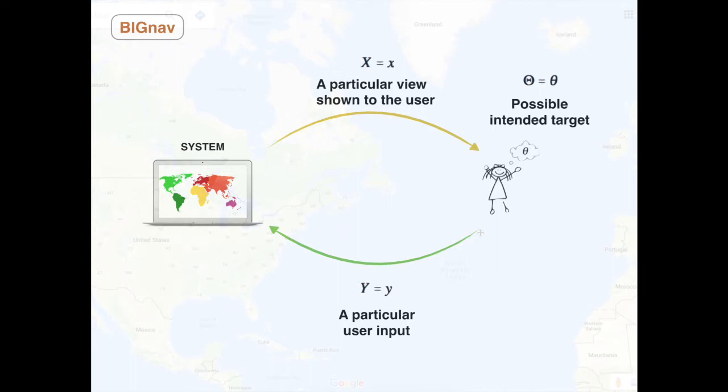Big Nav includes three parameters. Theta is the intended target in the user's mind. X is the view shown by the system. Y is the command issued by the user based on what the user wants, theta, and what they see, x.